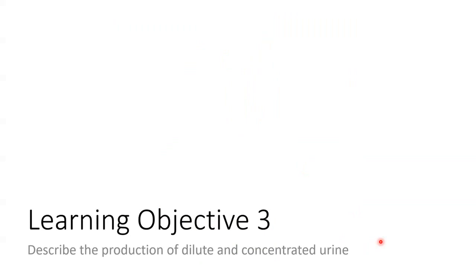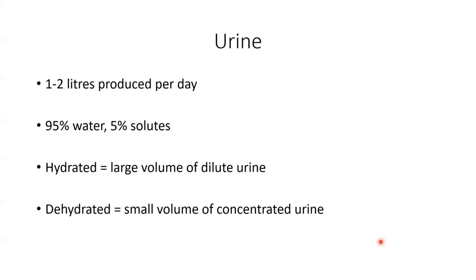Learning objective number three is to describe the production of dilute and concentrated urine. In people with healthy, normally functioning kidneys, approximately one to two litres of urine are produced per day. The amount of urine produced is affected by fluid intake, blood pressure and GFR, diet — particularly sodium consumption — body temperature, diuretics, and general health. Typically, urine is about 95% water and 5% solutes, including electrolytes, waste products from cellular metabolism, and exogenous substances such as drugs.